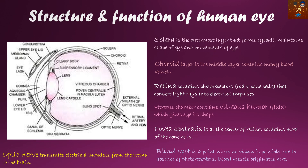Regarding the structure and function of different parts of the human eye — this is a structure which is very easy to draw. The sclera is the outermost layer that forms the eyeball; it maintains the shape of the eye and the movements of the eye.